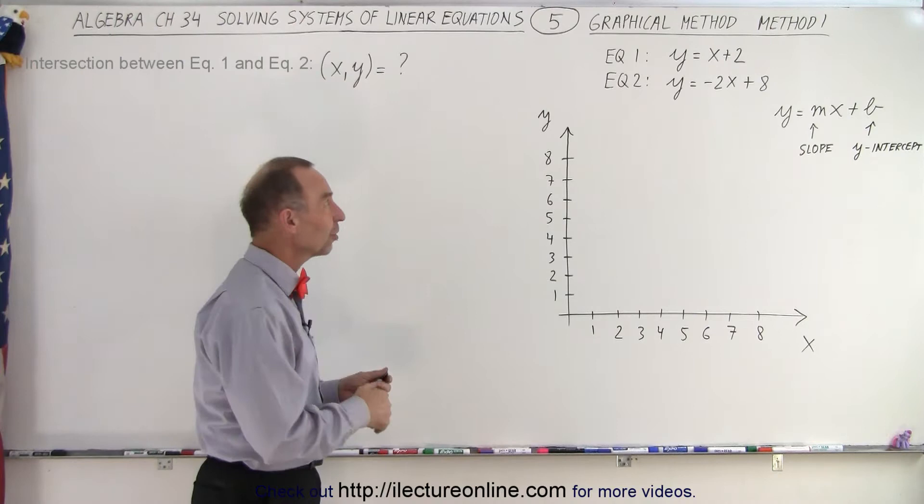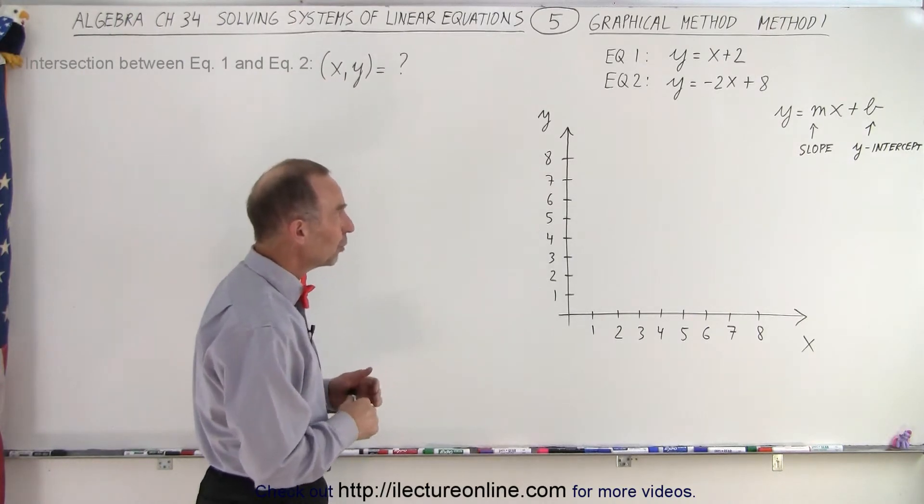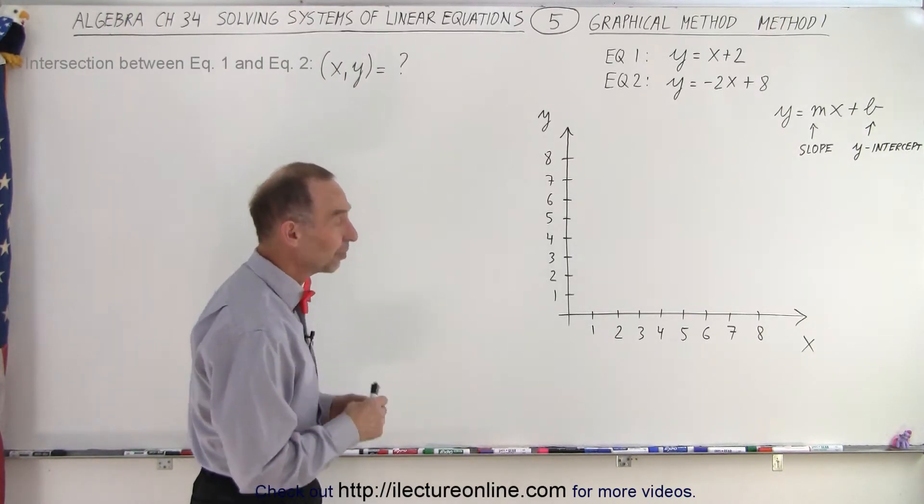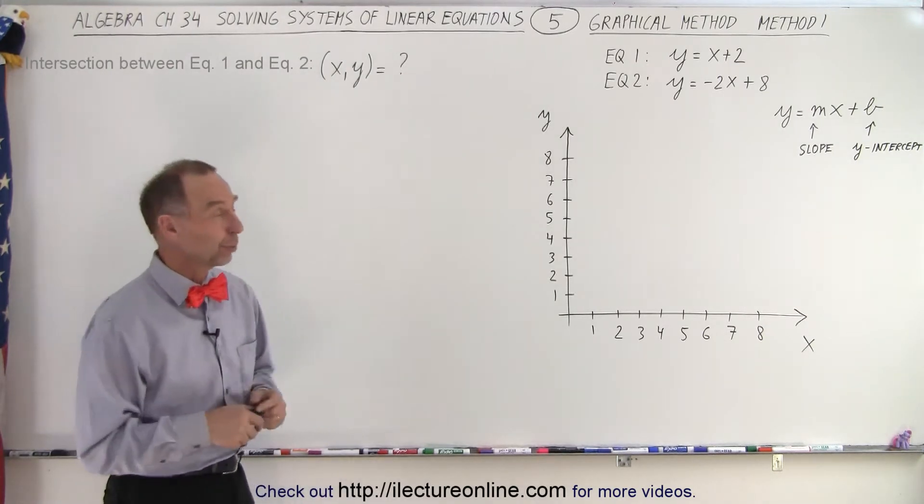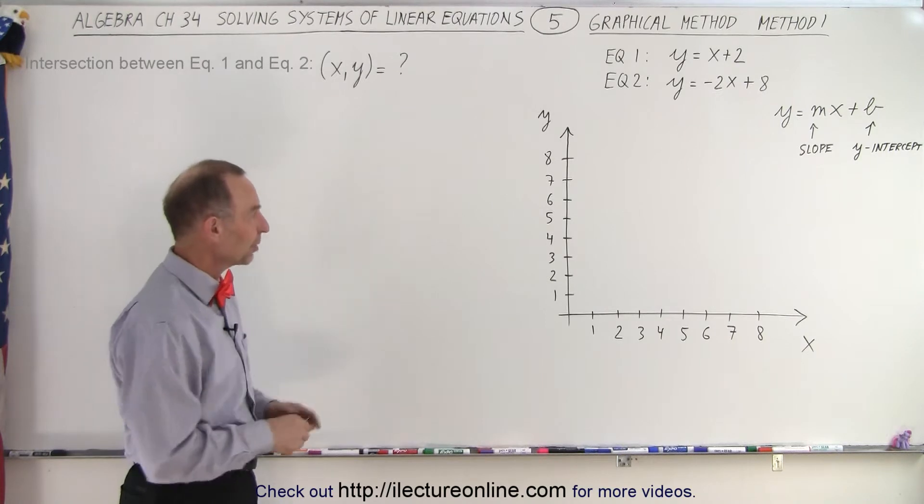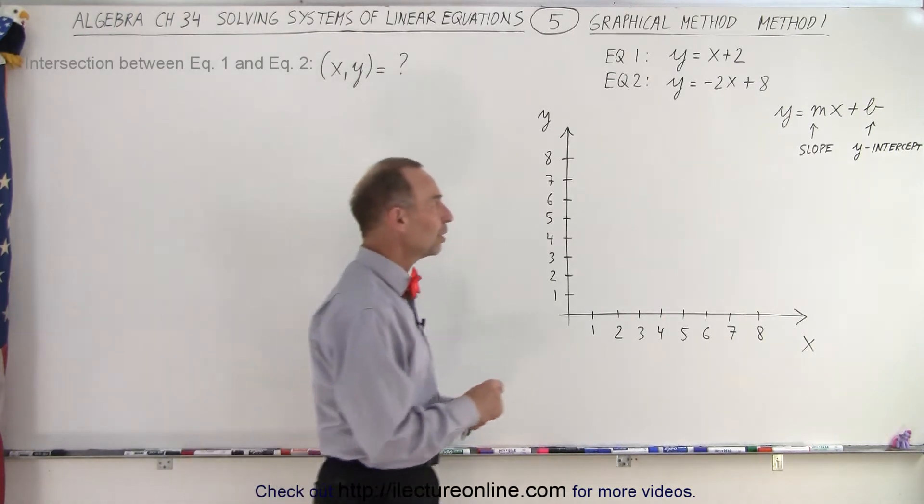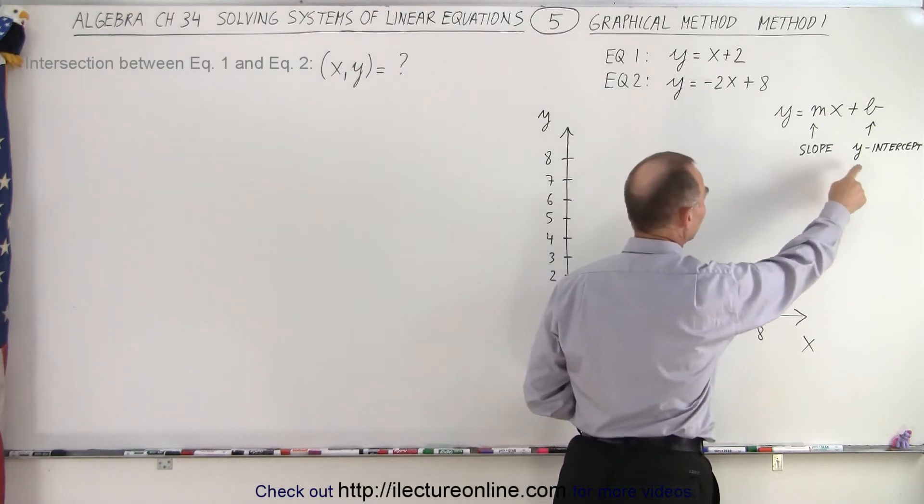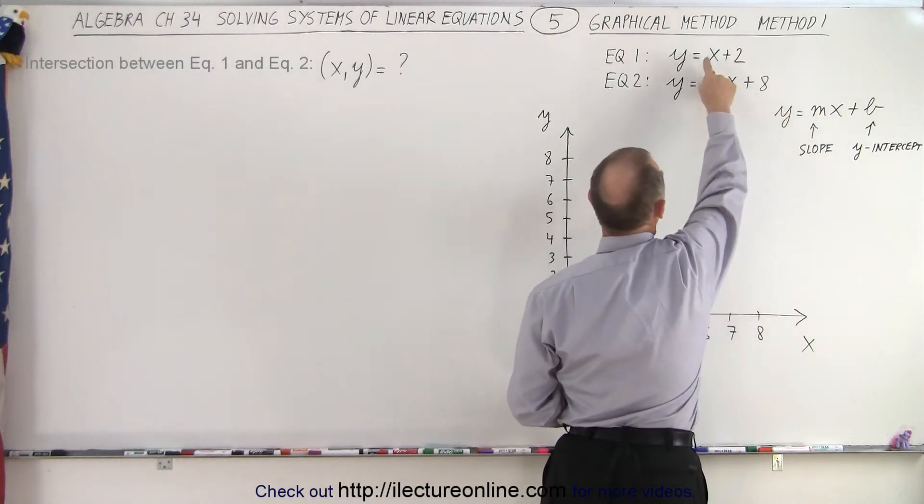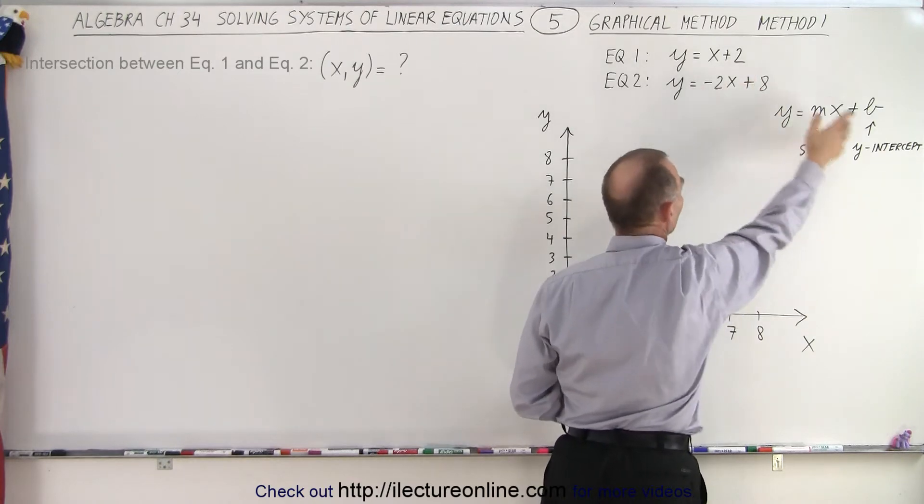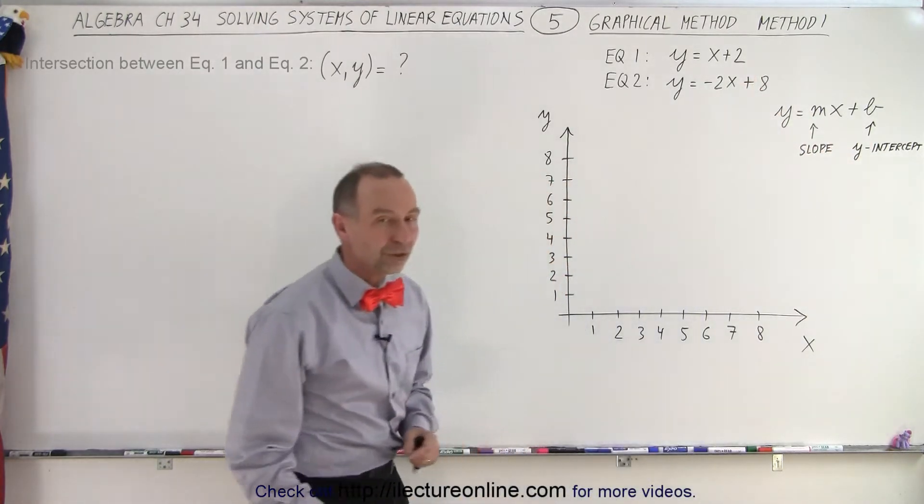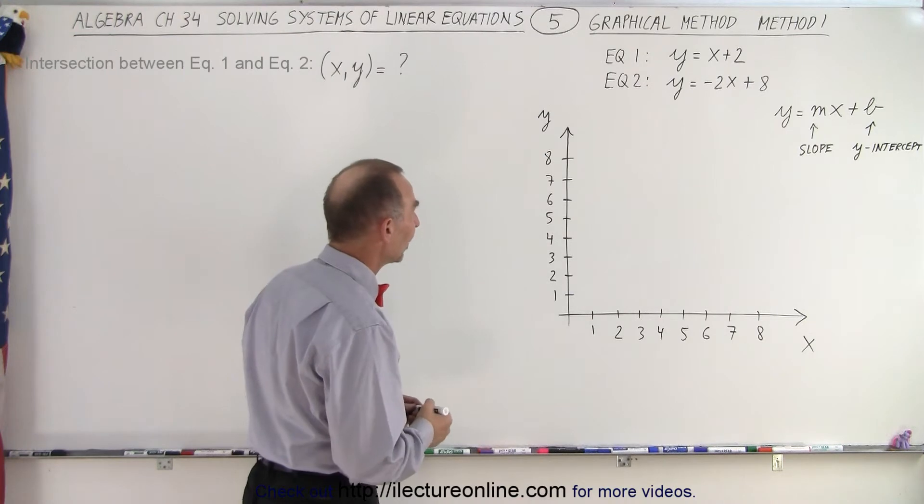The two equations are y equals x plus 2 and y equals minus 2x plus 8. We're going to use the same two equations for all eight methods so we can see how they compare to one another. We've already prepared ourselves with an xy-axis and we're going to use the general form y equals mx plus b, where the coefficient in front of the x is the slope and the number by itself is the y-intercept. So let's graph the two equations and see what happens.